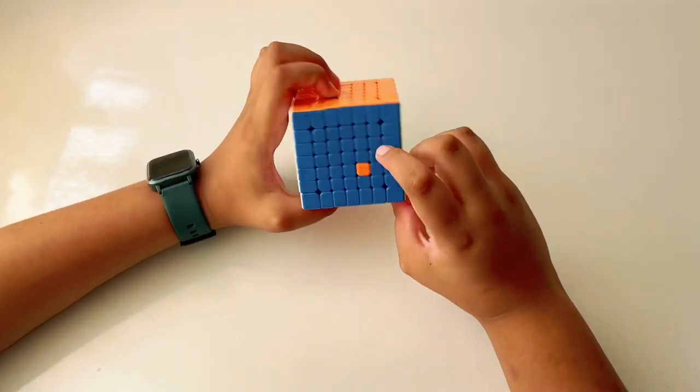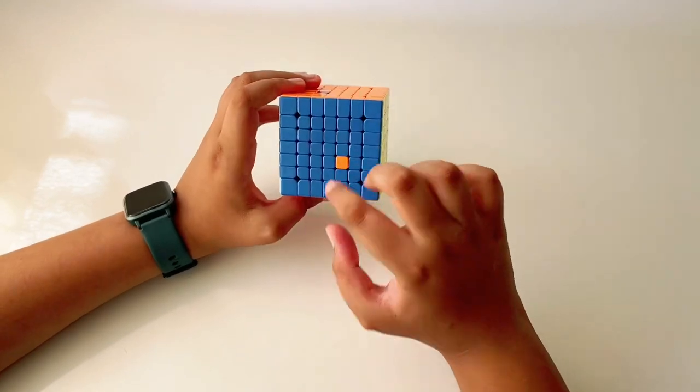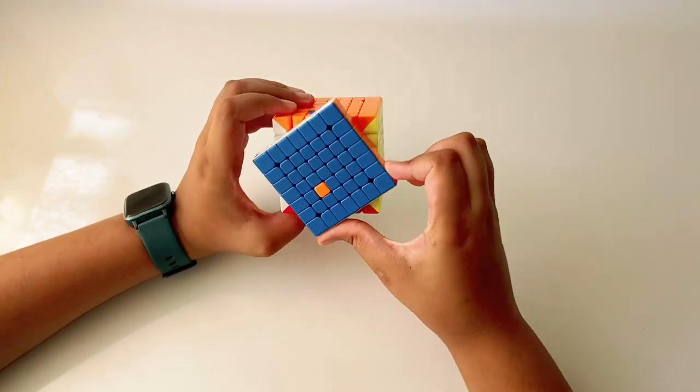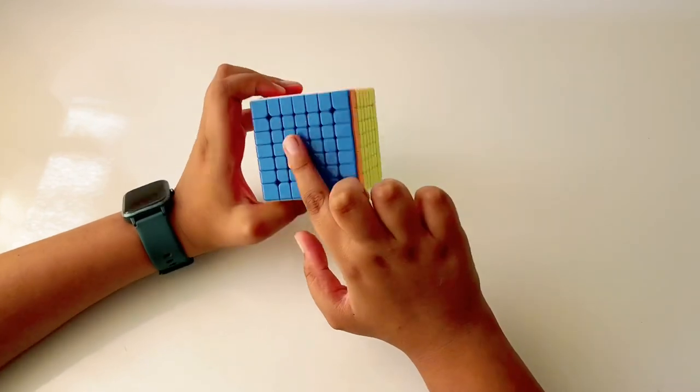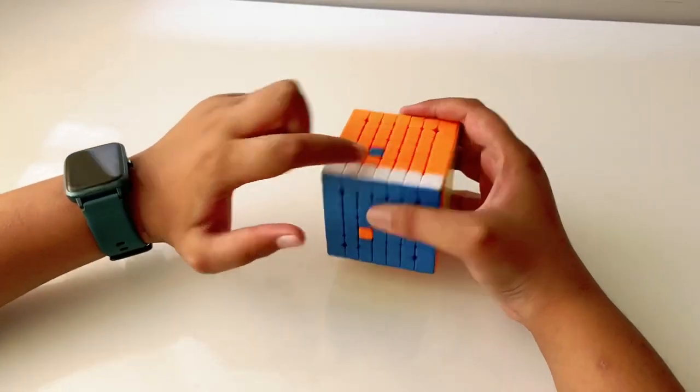First step is we have to get both of these pieces in a line. So we'll basically move this layer. This might mess up, but yeah, we'll get it in the line. Now we take this piece over here so that it matches with its color.